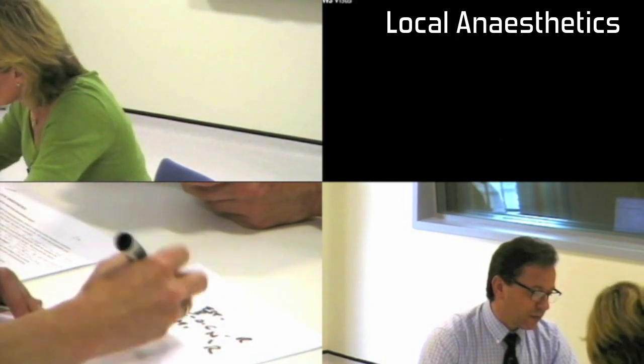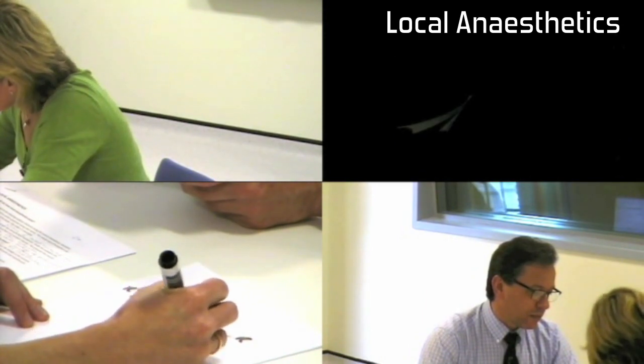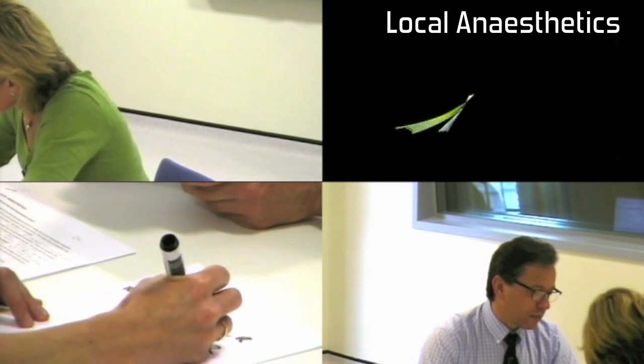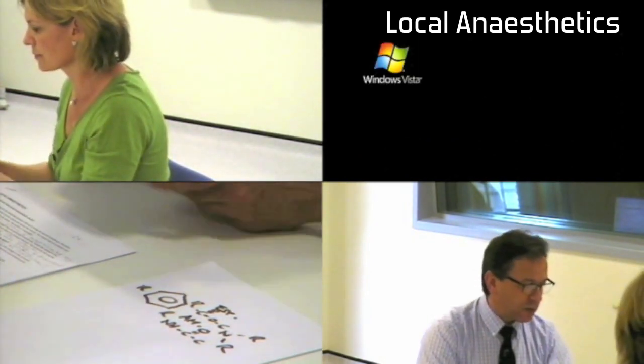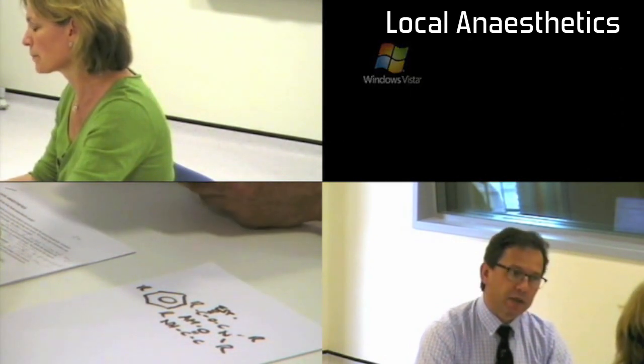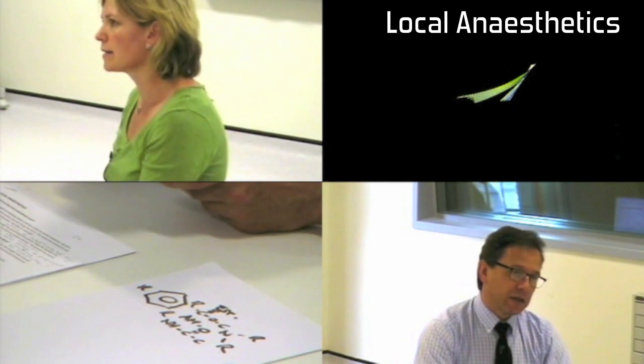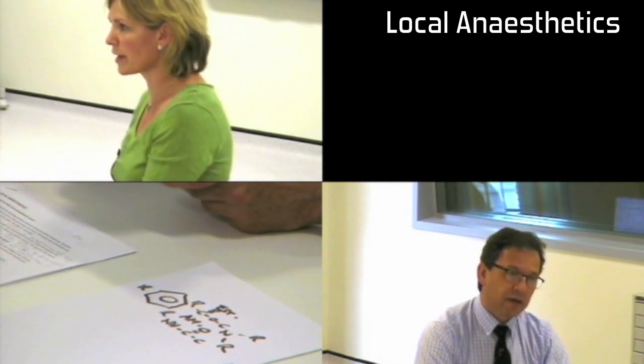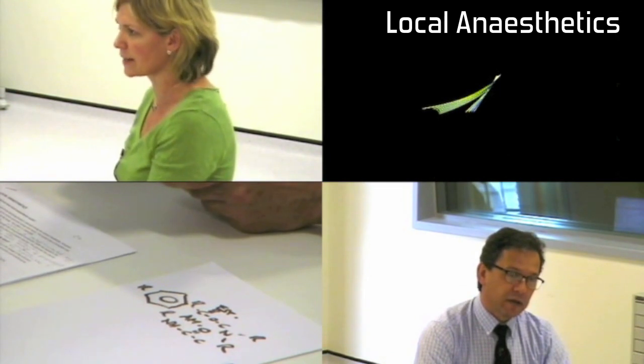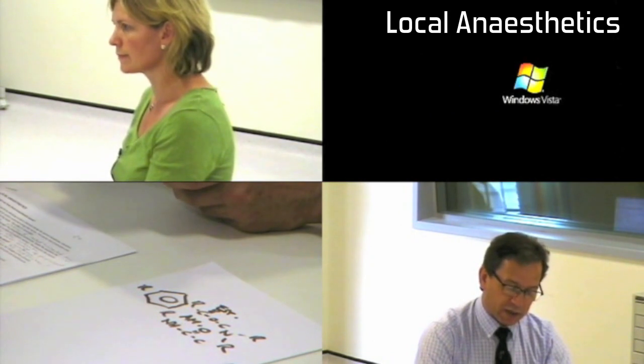And amides? Amides have an amide group and another oxygen. Fantastic. Can you give me a couple of examples of local anesthetics in each group? Ester anesthetics are amethocaine, cocaine, and procaine. Amide anesthetics like bupivacaine, ropivacaine, prilocaine, and lignocaine.